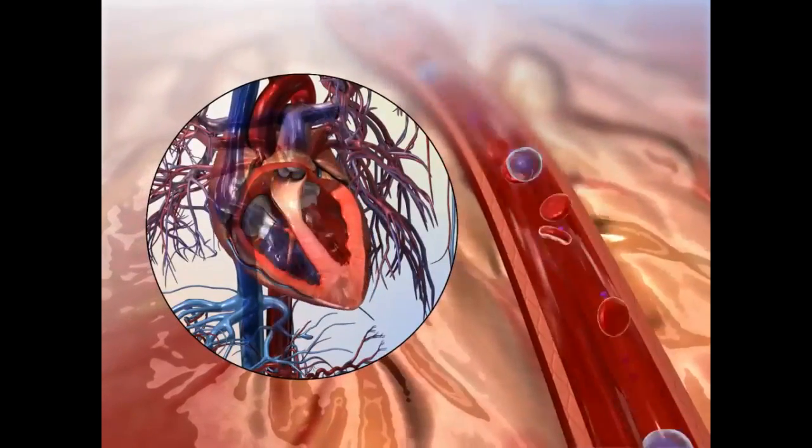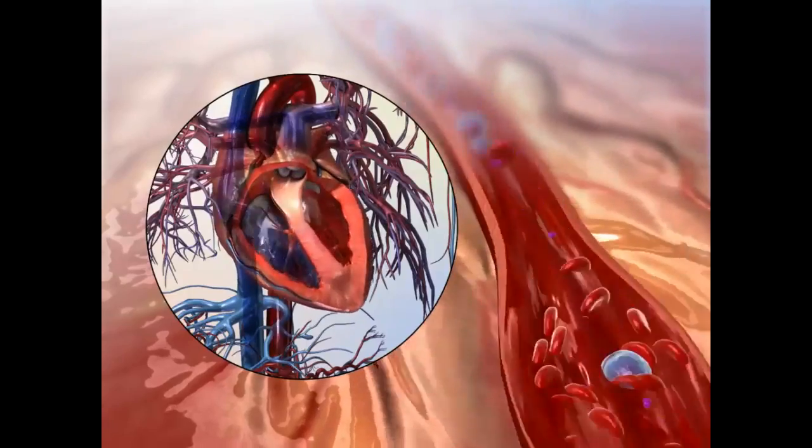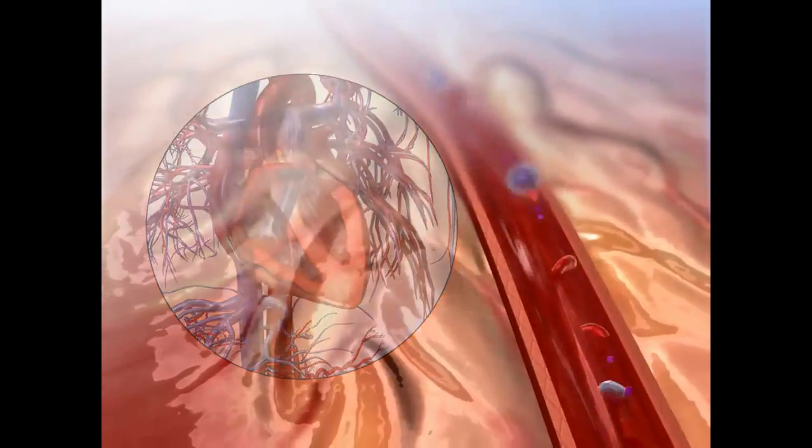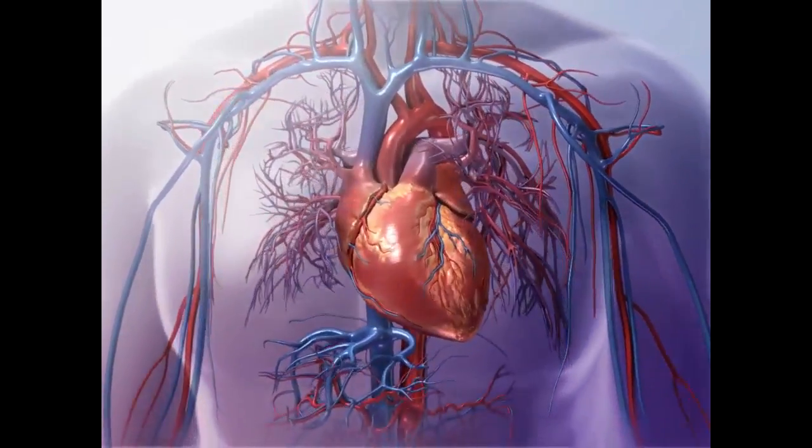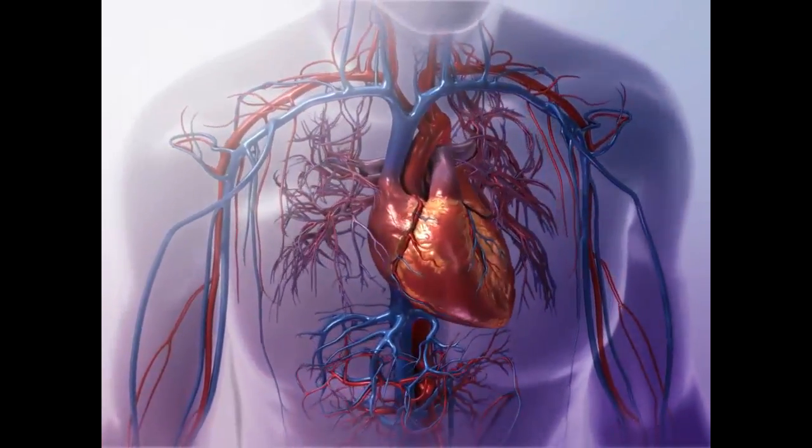When the ventricles relax, the vessel walls push back and blood flow slows down, resulting in lower pressure. The constant pumping of the heart maintains blood pressure and supply throughout the body.